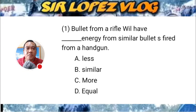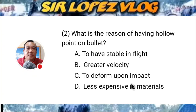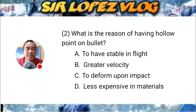Question number two: What is the reason for having a hollow point on a bullet? A) to have a stable flight, B) greater velocity, C) to deform upon impact, or D) less expensive in materials?